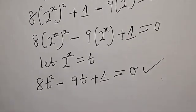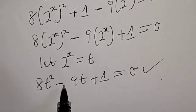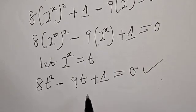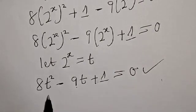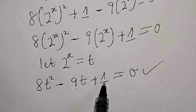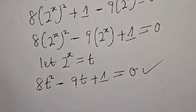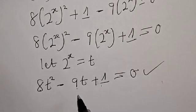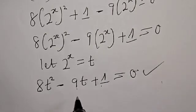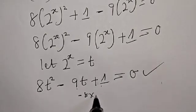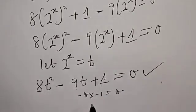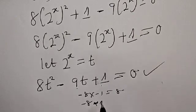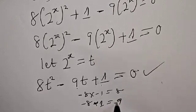You can see that the coefficient of t squared is 8, the coefficient of t is 9, and we have 1 as the constant. Now we are going to use the factorization method. We have 8 times 1, that is 8. We find two numbers such that their product equals positive 8 and their sum equals minus 9. If we take minus 8 multiplied by minus 1, that is 8, and minus 8 plus minus 1 equals minus 9.